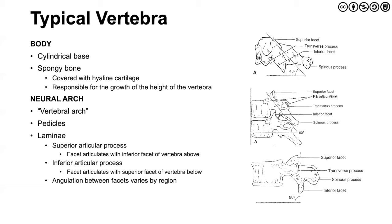Just anterior to that facet joint is where we find the neural arch, also referred to as the vertebral arch. This is made up of the pedicles and lamina. Here we see our superior articular process and our inferior articular process. These comprise our superior and inferior facet joints, which articulate with the vertebra above and below, and also provide an angulation.